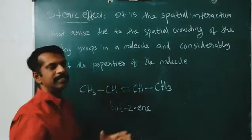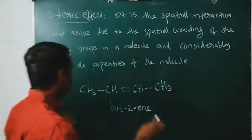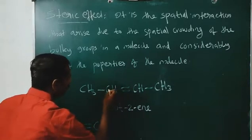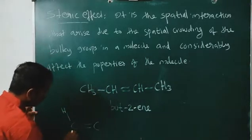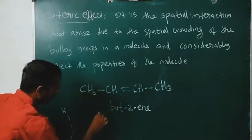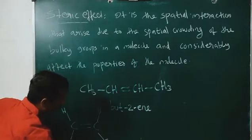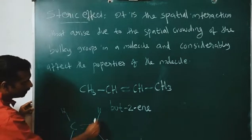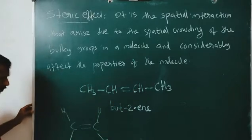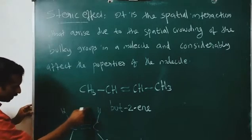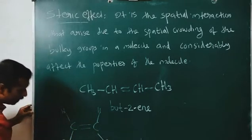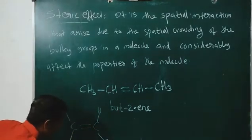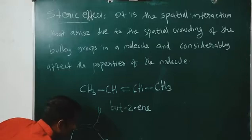But-2-ene has two types of stereo isomers. For the first one, drawing the double bond C=C: on the first carbon there is a hydrogen and a CH3 group, and on the second carbon also there is a hydrogen and a CH3 group. This is the actual structure of but-2-ene. Here you can see that the hydrogen atoms are on the same side of the double-bonded carbon atom, and the two methyl groups are also on the other side. This isomer is known as cis-but-2-ene.